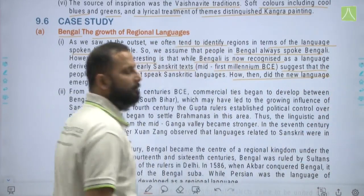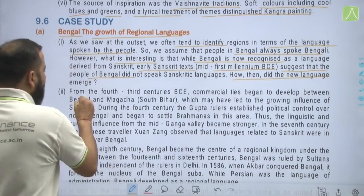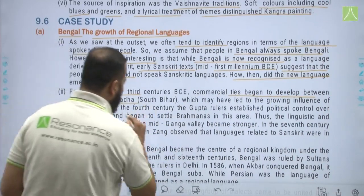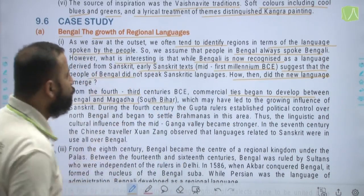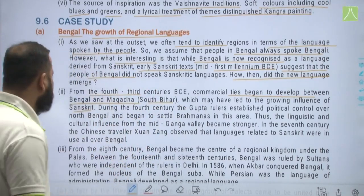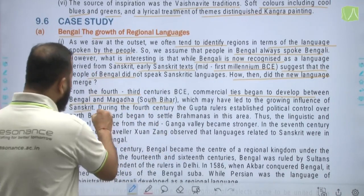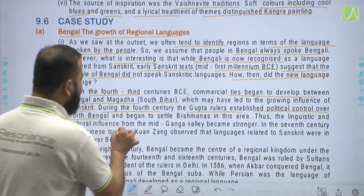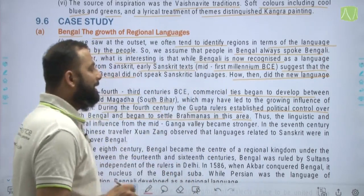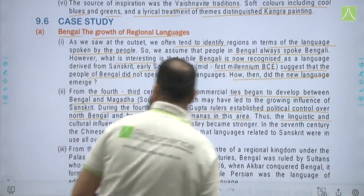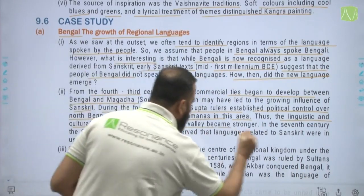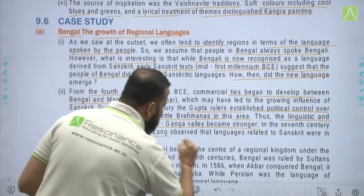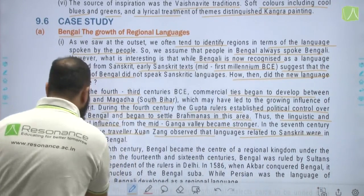From the 4th and 3rd centuries BC, commercial ties began to develop between Bengal and Magadha in South Bihar, which may have led to the growing influence of Sanskrit in the region. During the 4th century, the Gupta rulers established political control over North Bengal and began to settle Brahmins in this area, strengthening linguistic and cultural influence from the mid-Ganga valley. By the 7th century, the Chinese traveller Xuanzang observed that languages related to Sanskrit were in use all over Bengal.